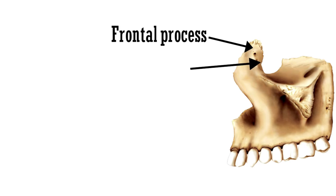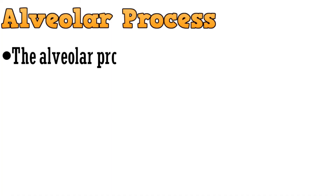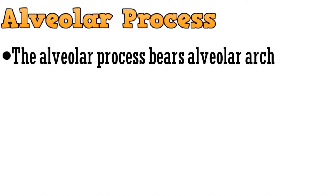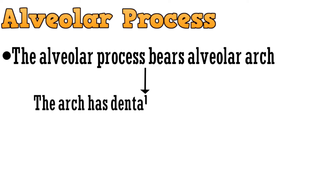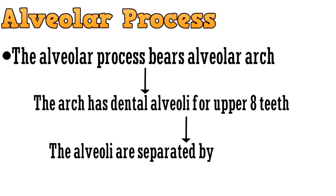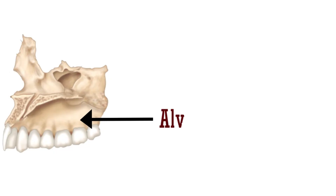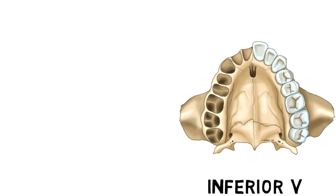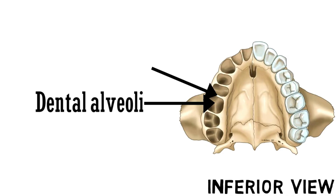Next is the alveolar process. The alveolar process bears the alveolar arc, and the arc has the dental alveoli for the upper eight teeth. These alveoli are separated by the inter-alveolar septa. The downward projecting process is the alveolar process, and in the inferior view, the sockets visible are the dental alveoli separated by the inter-alveolar septa.